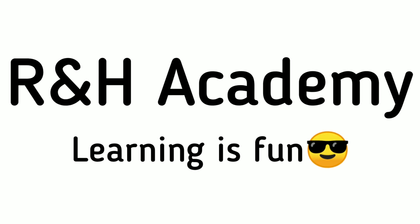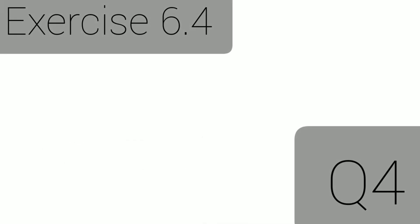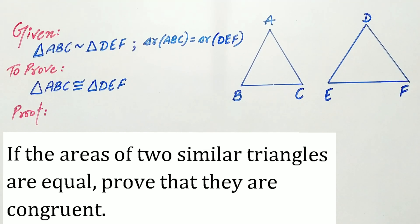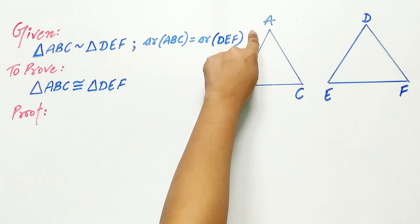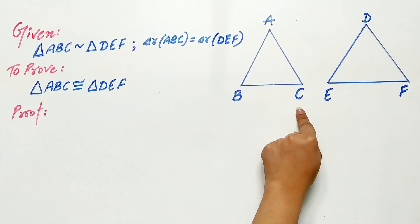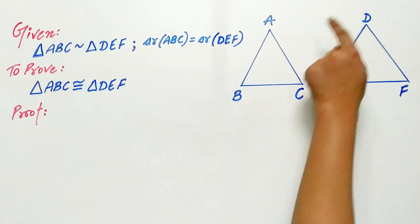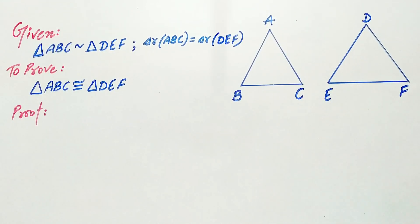Welcome to RNH Academy channel. Question 4 of exercise 6.3 says, if the areas of two similar triangles are equal, then prove that they are congruent. It's given that area of triangle ABC is equal to area of triangle DEF. Both these triangles are similar. We have to prove that both the triangles are congruent.